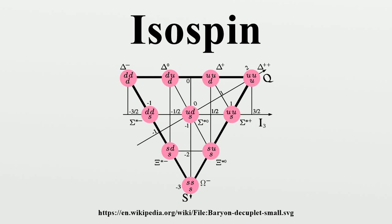Isospin was introduced as a concept well before the development in the 1960s of the quark model, which provides our modern understanding. The specific designation isospin was introduced by Eugene Wigner in 1937. Protons and neutrons were grouped together as nucleons because they both have nearly the same mass and interact in nearly the same way. If the electromagnetic interaction is neglected, it was convenient to treat them as different states of the same particle. When constructing a physical theory of nuclear forces, one could simply assume that it does not depend on isospin, although the total isospin should be conserved.